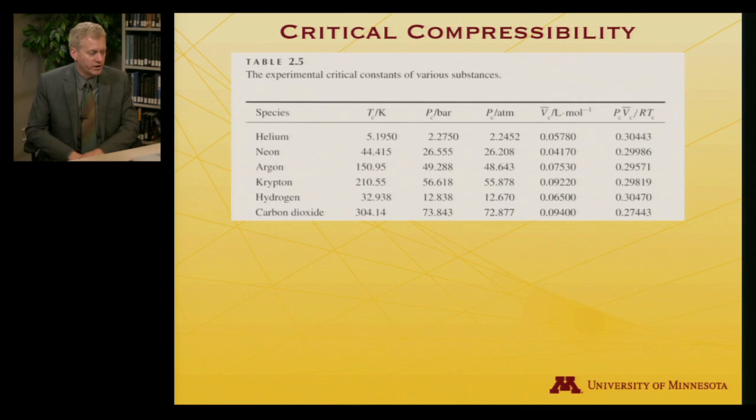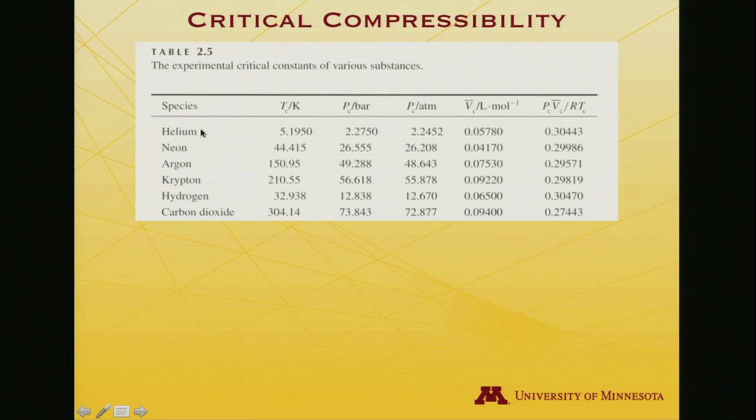Let's look at a few of those data. I've tabulated helium, neon, argon, krypton, hydrogen—the noble gases increasing in size and mass—and molecular hydrogen and carbon dioxide. These are the critical temperatures. Notice that helium's critical temperature is only about 5.2 degrees Kelvin. So above 5 degrees Kelvin, only 5 degrees above absolute zero, you cannot liquefy helium. If you hear someone refer to liquid helium, it's a very cold substance, typically about 4 degrees Kelvin.